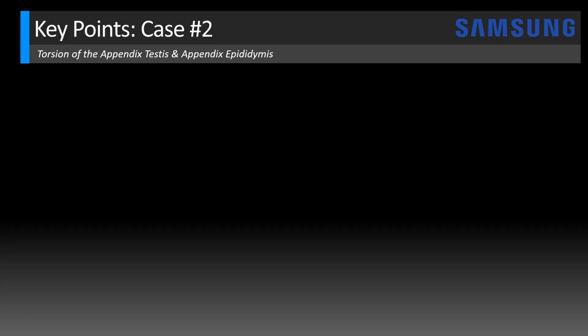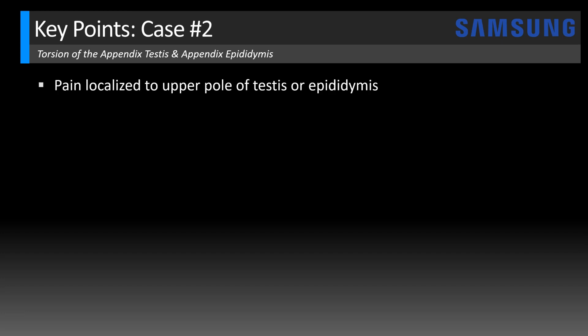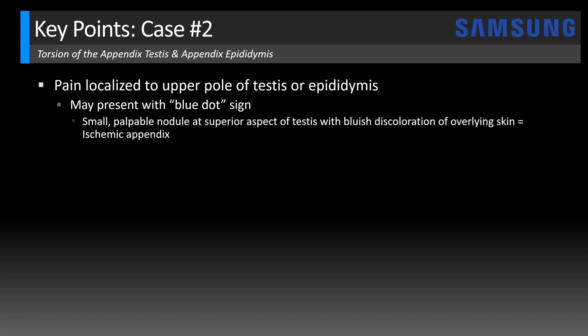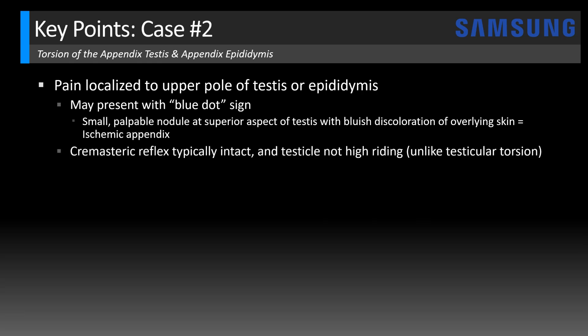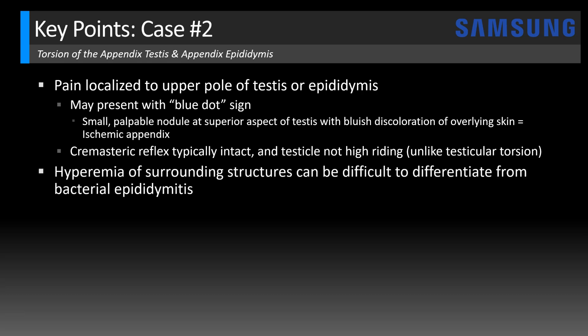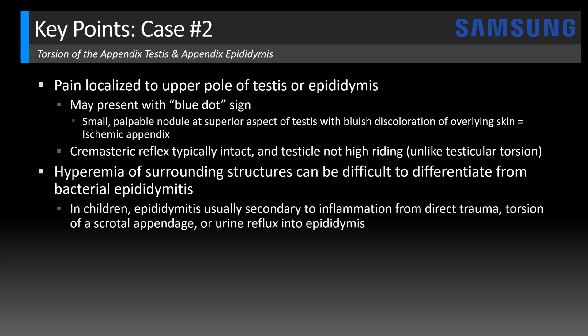Final key points. With torsion of a scrotal appendix, there tends to be pain localized to the upper pole of the testis or epididymis. At physical examination, this may present with the blue dot sign — a small palpable nodule at the superior aspect of the testis with bluish discoloration of the overlying skin, corresponding to the ischemic appendix. Also, the cremasteric reflex is typically intact and the testicle is not usually high riding, which is different from testicular torsion. However, because of pain and hyperemia localized to the epididymis, it can be difficult to differentiate from bacterial epididymitis on ultrasound — especially if the torsion appendix is not identified. In children, epididymitis is often secondary to inflammation from causes such as direct trauma, torsion of a scrotal appendage, or urine reflux into the epididymis.